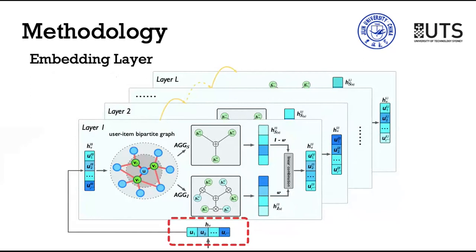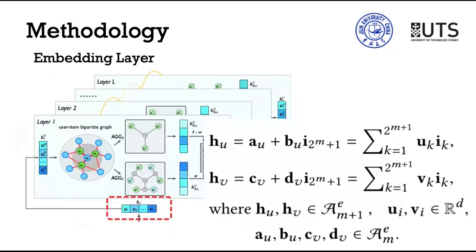We first introduce the embedding layer. The embedding layer encodes users and items with Cayley-Dixon representations. Specifically, given a user-item pair, user and item embeddings are formulated according to the definition of Cayley-Dixon construction as follows.